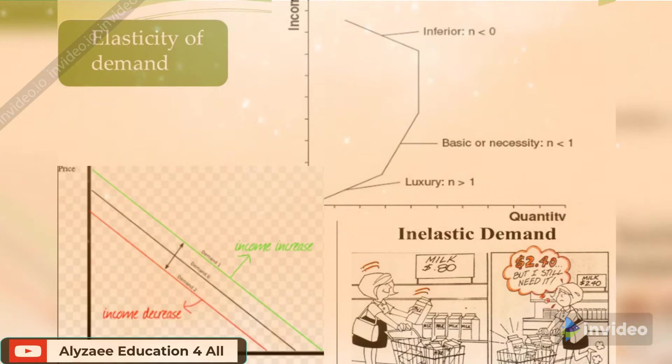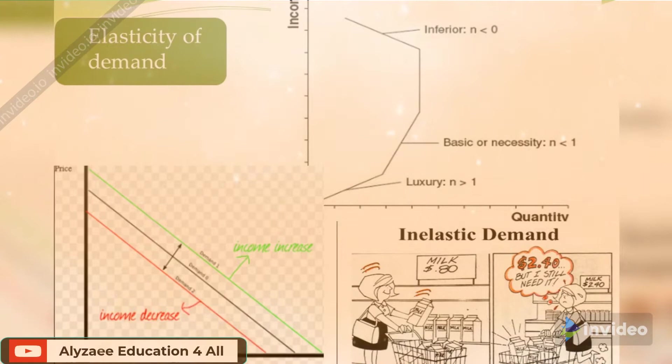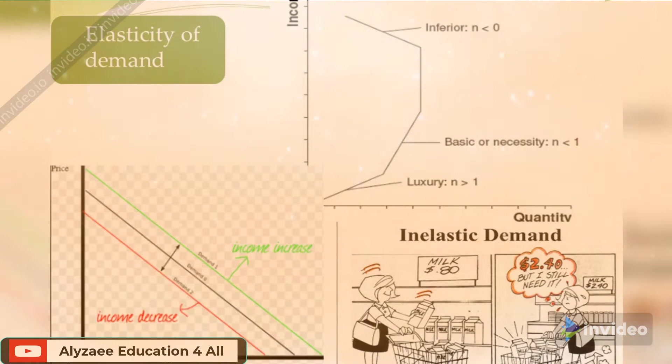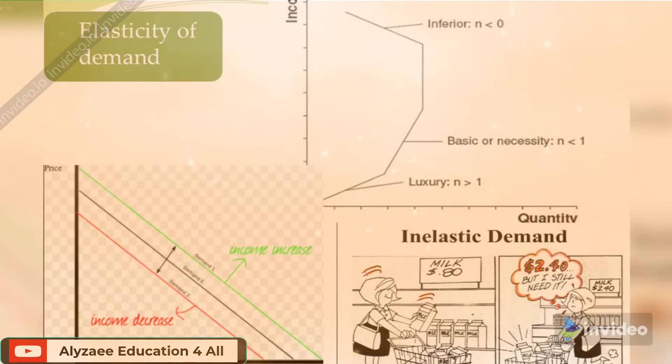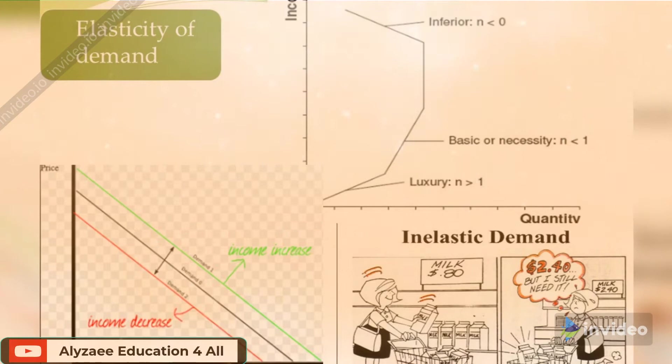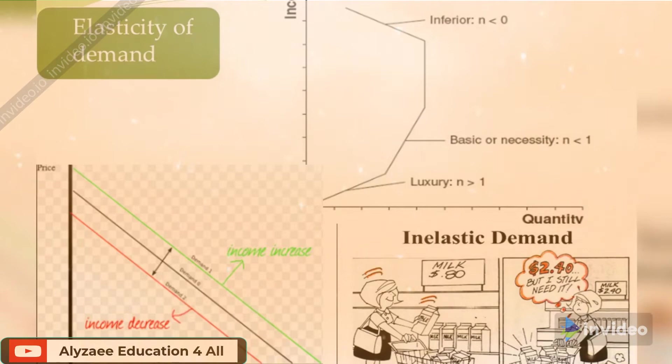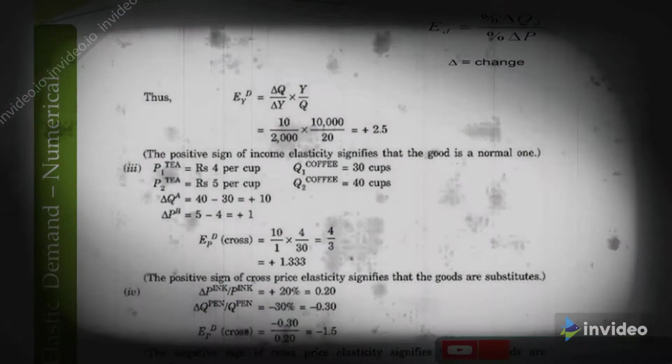And in elasticity, if the prices are low, like the example given here is of milk, so if it is 80 cents, it means you can even pick a carton with more milk. If the price goes up, let's say it is 2.4 dollars, this means that you will only buy those products or items in the quantity which are just essential for your use and you cannot buy the excessive items.